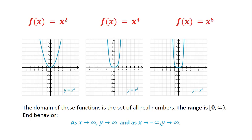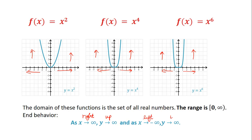As the exponent increases, these graphs get steeper and they all pass through (0,0). The domain is all real numbers and the range is from 0 to infinity. For end behavior, on both ends — left and right — the graph goes up. In arrow notation: as x goes to infinity, y goes to infinity; and as x goes to negative infinity, y also goes to infinity.